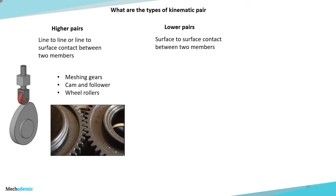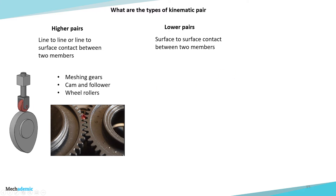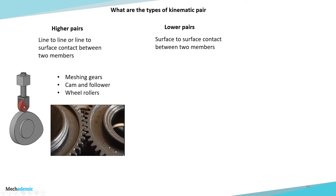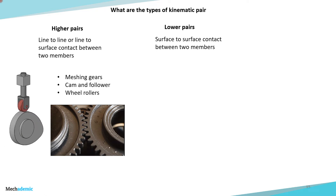For example, two gears meshing with each other — the teeth of the gears will ideally have line-to-line contact, not full surface contact. The same is the case with a cam and follower assembly. The cam has an irregular shape at its outer perimeter, and that shape produces the motion of the follower — a roller follower. The contact between the roller and the cam is line-to-line. Similarly, wheels rolling on the ground have line-to-line contact at the outer periphery. These are all called higher pairs.